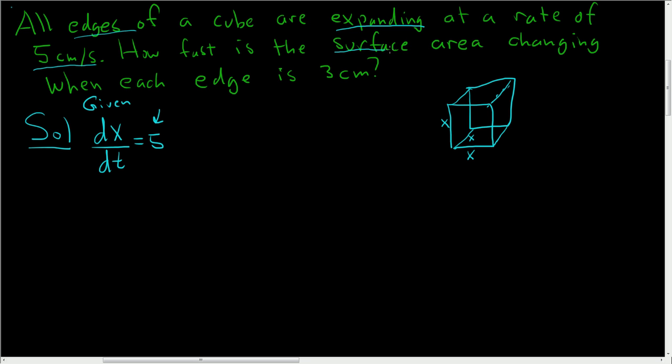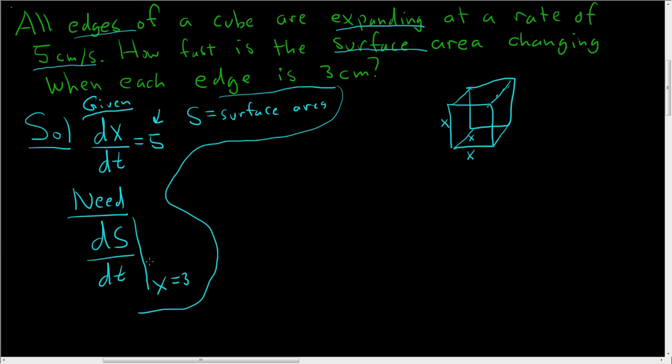Then we want to know how fast the surface area is changing when each edge is 3 centimeters. So if we let S be the surface area, we need dS/dt at the moment in time when each edge is 3 centimeters. So every time you do a related rates problem, I think it's a really good idea to write down what's going on. What you're given and what you need. It makes it a lot easier to do the problem.